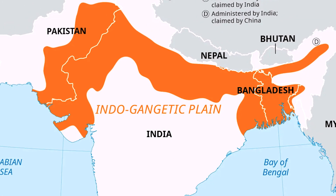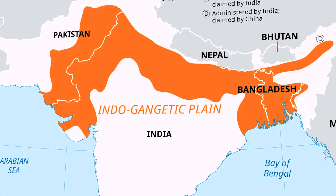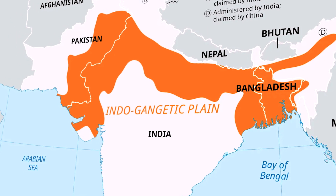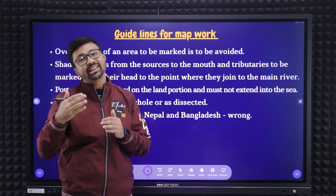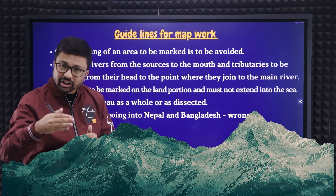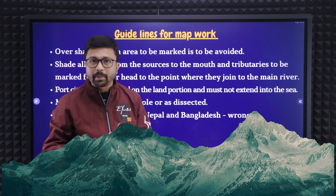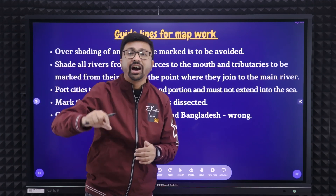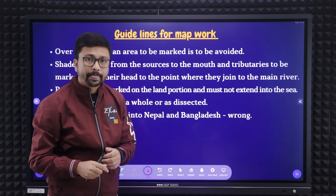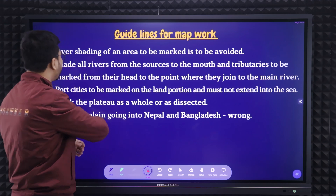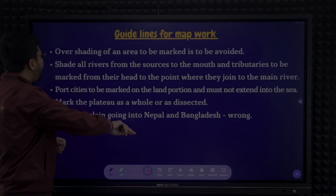Gangetic plains — remember, it should be marked on the Indian part only. It should not go on Nepal. On the other hand, the Himalayan mountains should not come on the Gangetic plain area — they should be on the Nepal side. Those are the things you need to remember.